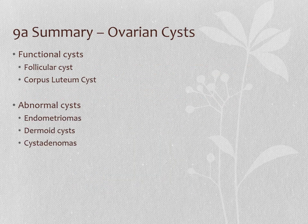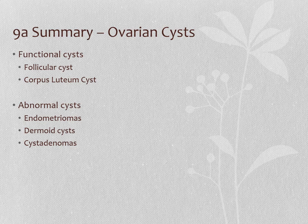So that's it for ovarian cysts. We have our functional cysts — which are just normal ovarian structures getting a little out of hand, including follicular cysts and corpus luteum cysts — and then the three abnormal ones: the endometrioma, the dermoid cyst, and the cyst adenoma.